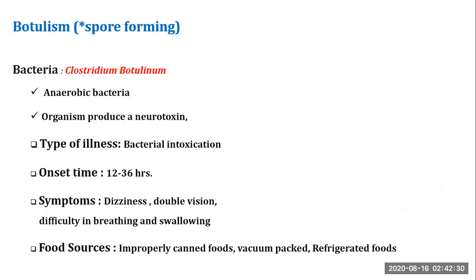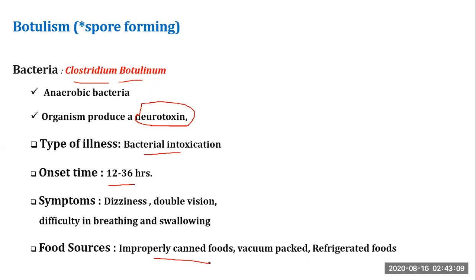First is botulism. It is caused by a spore-forming bacteria called Clostridium botulinum. It is an anaerobic bacteria and it can produce a neurotoxin called botulinum. Its illness is actually intoxication, as it produces a neurotoxin, making it a very dangerous bacteria. Its onset time is 12 to 36 hours. Symptoms include double vision, difficulty in breathing, and swelling. Food sources are mostly improperly canned food and refrigerated food, which are responsible for this kind of disease.